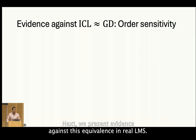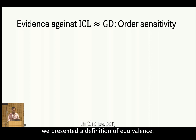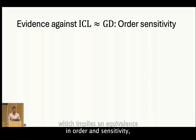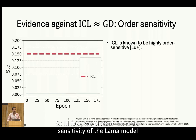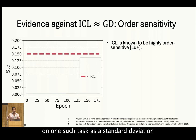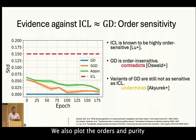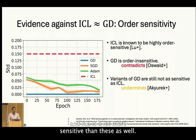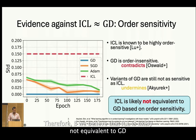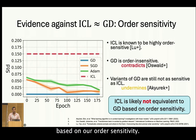Next we present evidence against this equivalence in real LLMs. In the paper, we present a definition of equivalence which directly implies an equivalence in order sensitivity. We know that LLMs are highly order sensitive — we plotted the order sensitivity of the LLaMA model on one such task as the standard deviation in its output probabilities of individual tokens and see this high sensitivity. However, GD is order insensitive, which directly contradicts one of the previous formulations. We also plot the order sensitivity of variants of GD like SGD and Adam, and ICL is a lot more sensitive than these as well, undermining another formulation which allows for order sensitivity.